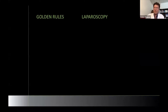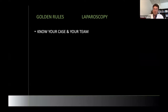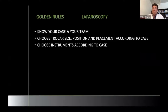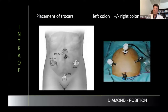Here are some golden rules for laparoscopy. Everybody knows you should know your case and your team. You should use your trocar size, position, and placement according to the case — it's different if you have an ileus, revisional surgery, previous abdominal surgery, or a planned elective case. You should also choose your instruments and have a standard — having standards is the best thing.